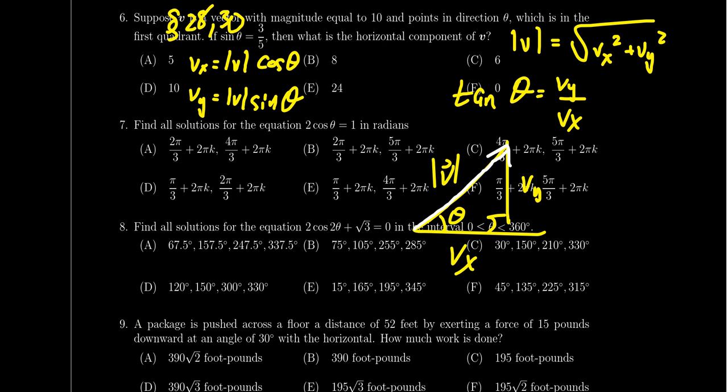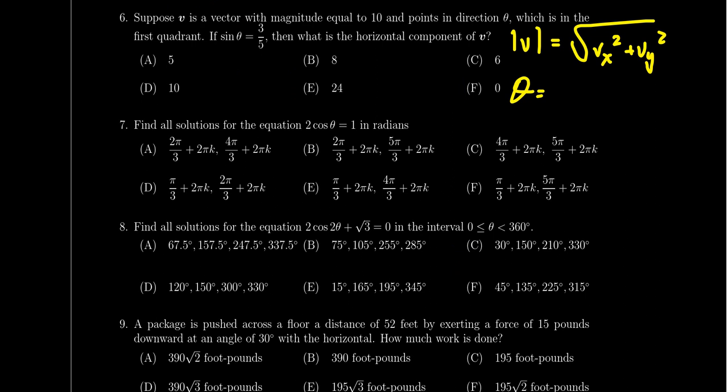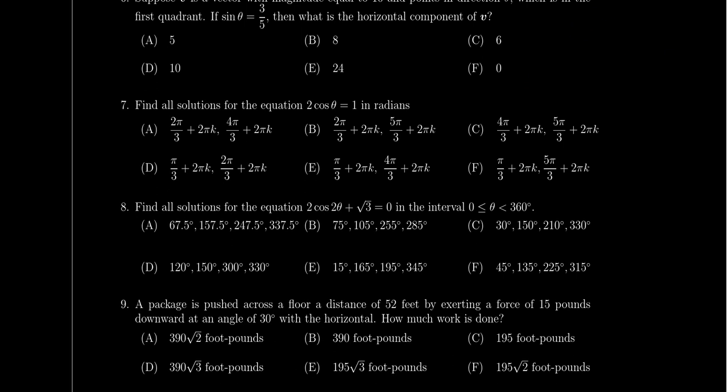Lecture 31 was about dot products, and question nine covers that. Lecture 29 was exclusively about vector story problems, which will appear in the free response section. The multiple-choice section covers the vector chapter very extensively. The only question from Chapter 8 in the multiple choice is the area question. From Chapter 7, you will see two questions — questions seven and eight — about solving trigonometric equations.